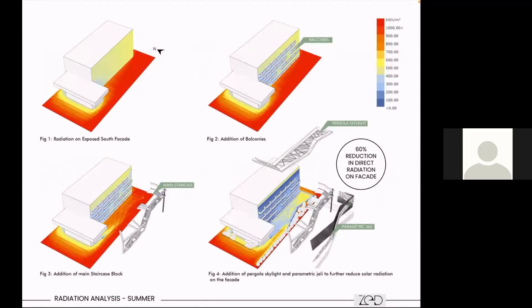We did insolation analysis to understand how we can further reduce the radiation impact, because direct and diffuse radiation impacts at least 30 to 40% of the cooling load. By designing balconies on the south, we were only able to reduce radiation on some parts of the building, but the horizontal surface was still receiving very high radiation. We further introduced the social staircase along with a pergola and a parametric skin blanketing the building, which reduces direct and diffuse radiation on the south and north facade by almost 60% on vertical surfaces and 40% on horizontal surfaces, creating a very favorable microclimate outside and decreasing the demand for enhanced cavity or insulated walls.